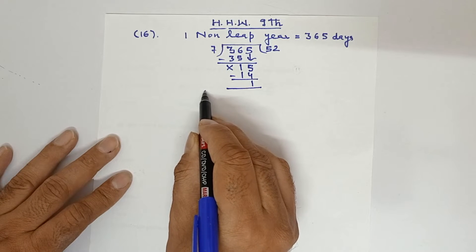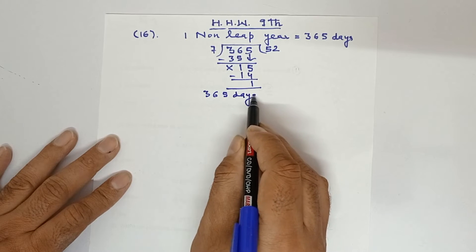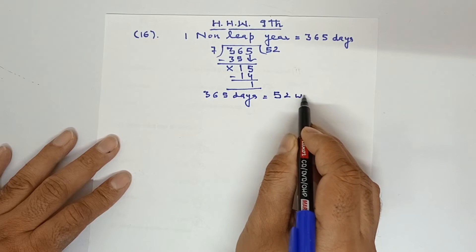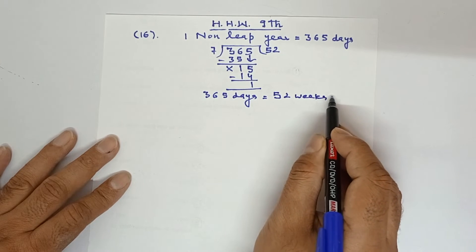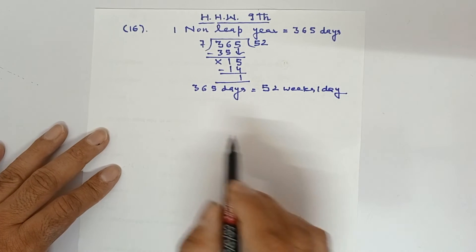So how will we write? We will write 365 days equals 52 complete weeks and 1 day. Now 52 weeks are complete.